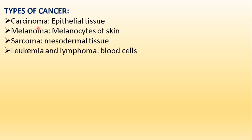There are different types of cancer depending upon the tissue or organ where it is occurring. Carcinoma occurs in epithelial tissues — for example, skin cancer or melanoma, where the melanocytes of the skin are affected. Sarcoma occurs in mesodermal tissue, below the epithelial layers. Leukemia and lymphoma occur when blood cells undergo proliferated divisions.